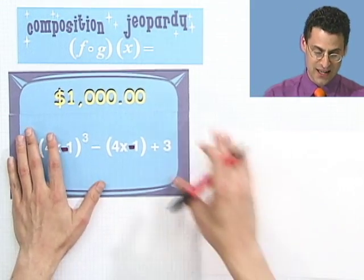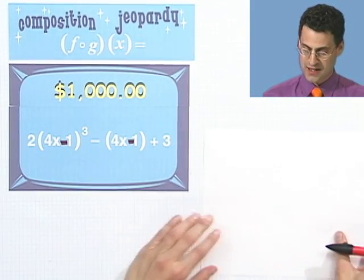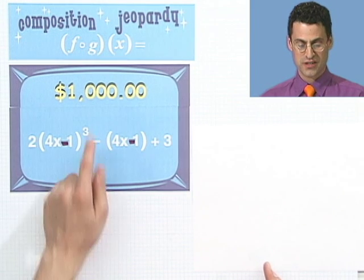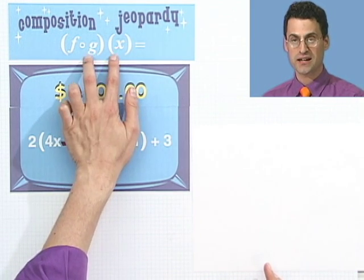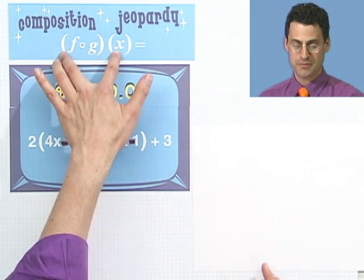Again, we're trying to identify an inside and an outside. The inside function is going to be the g, since that comes first in here. And then the outside function is going to be the f.